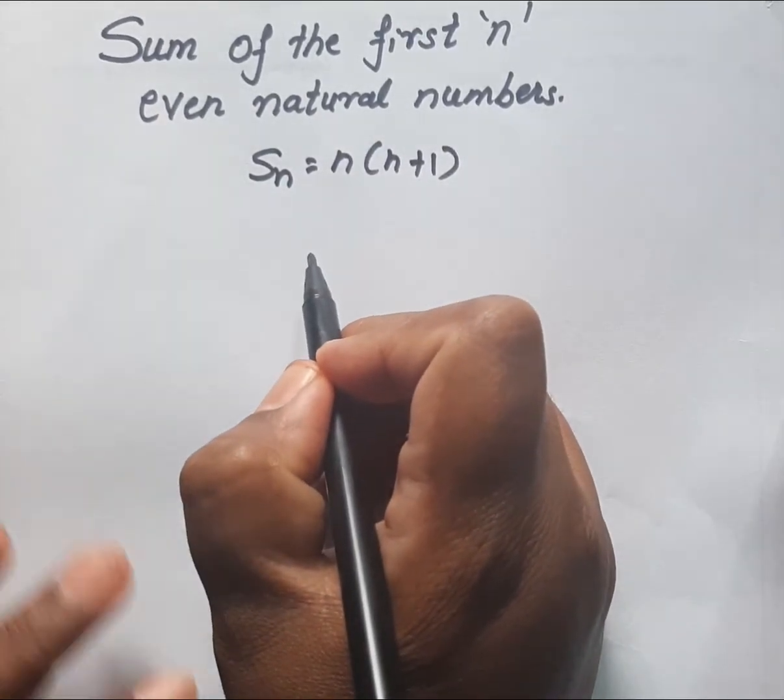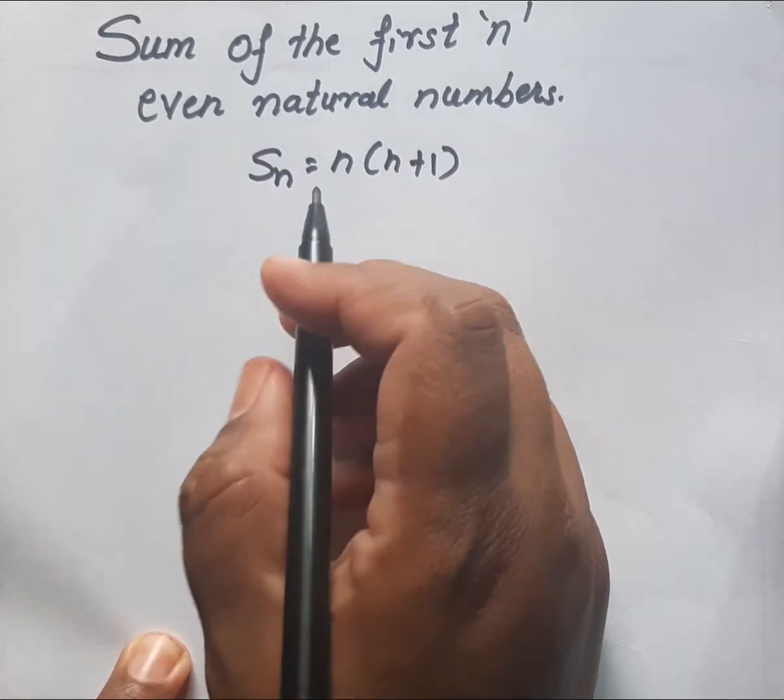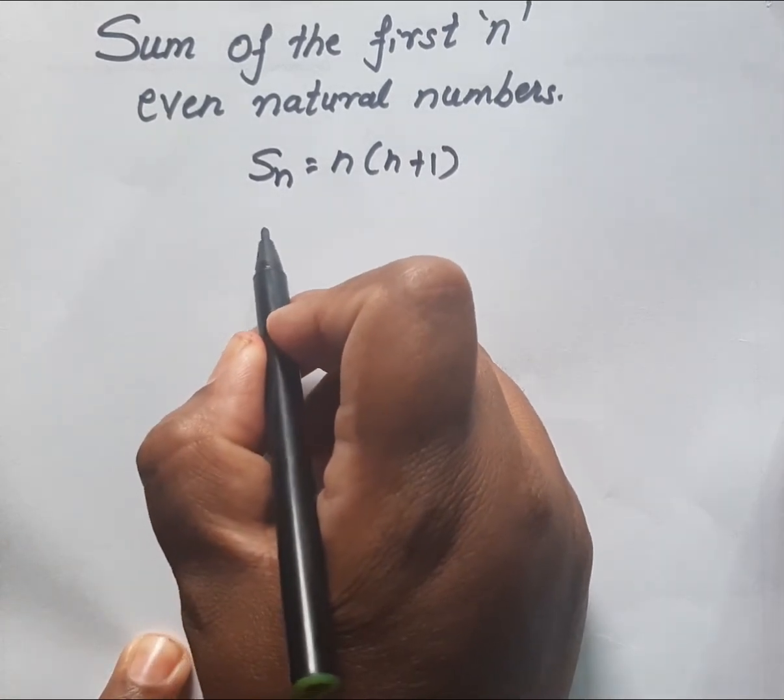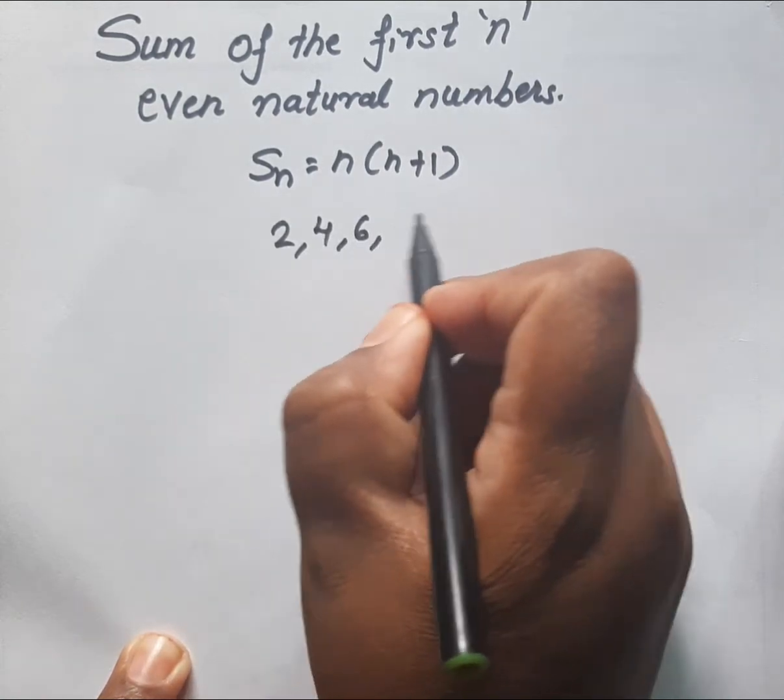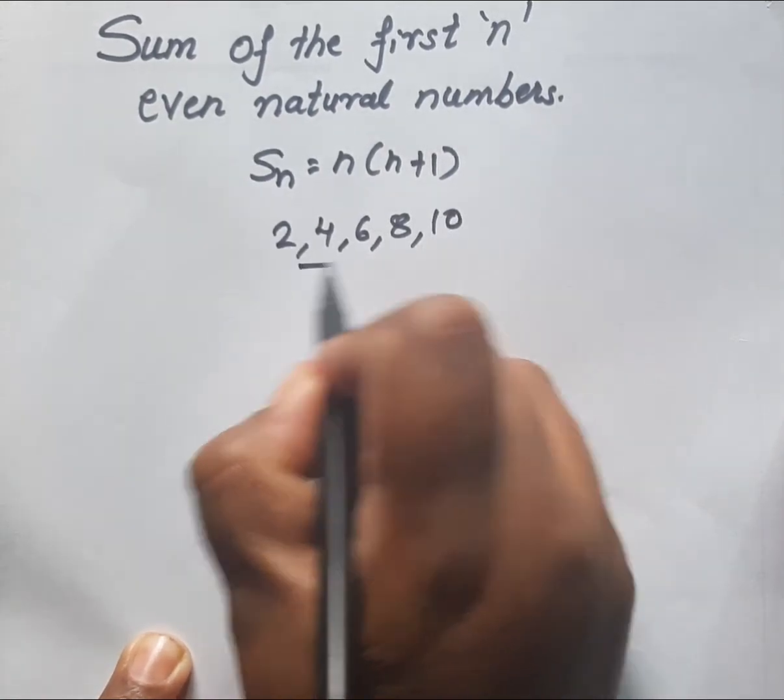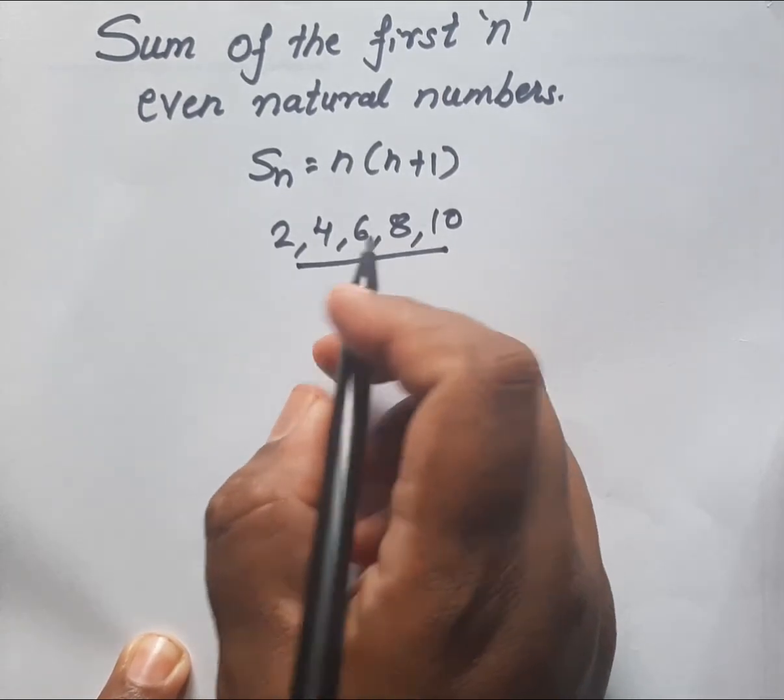Now we will take an example of the first 5 even natural numbers: 2 comma 4 comma 6 comma 8 comma 10. These are the 5 even natural numbers.